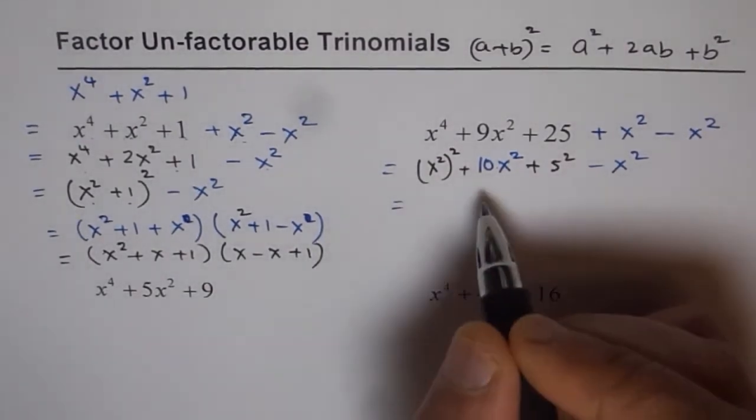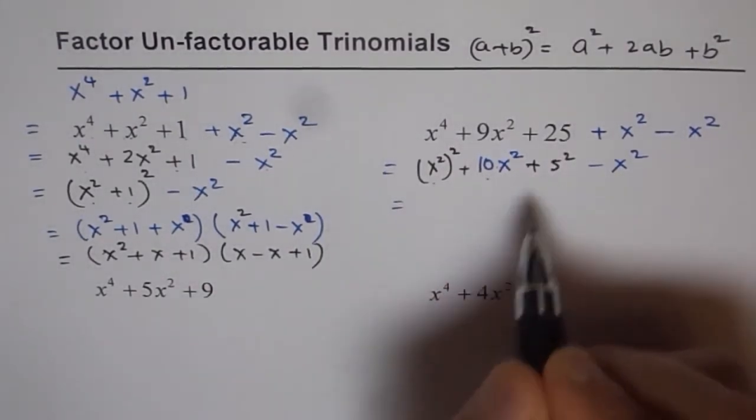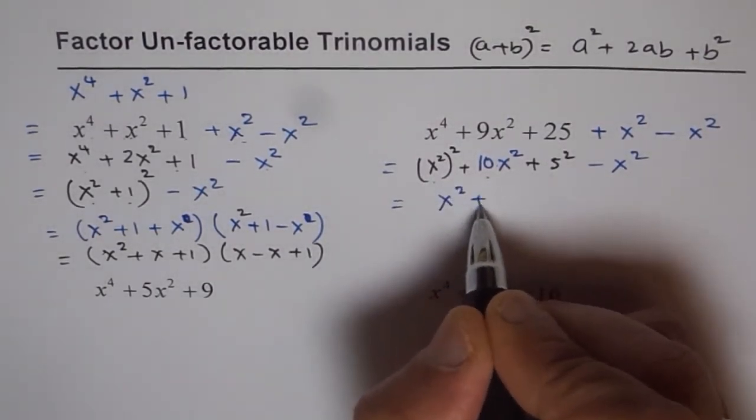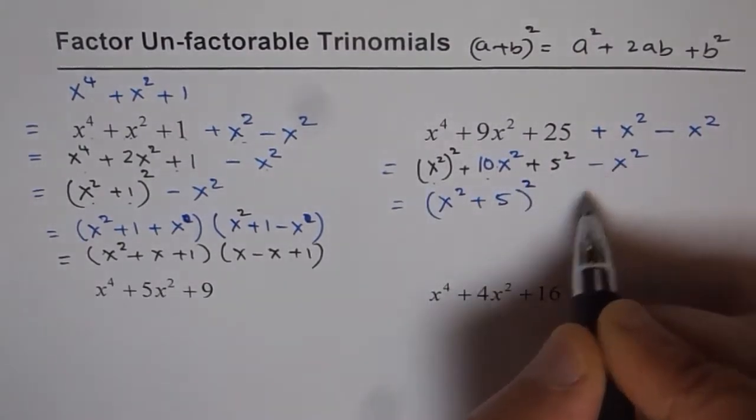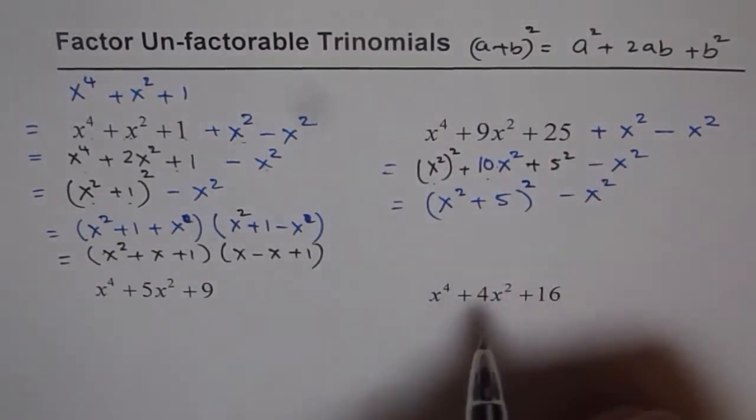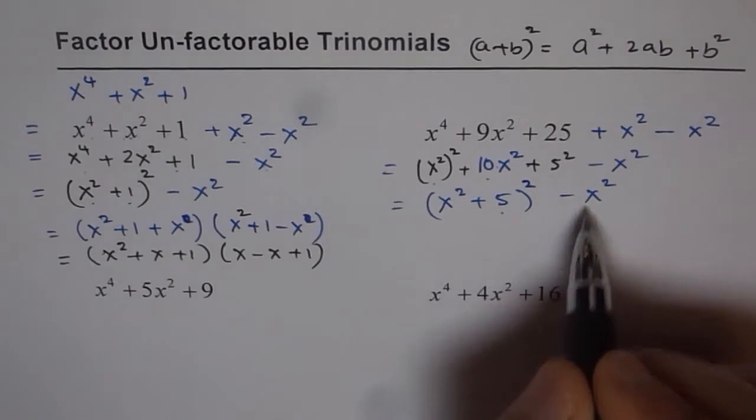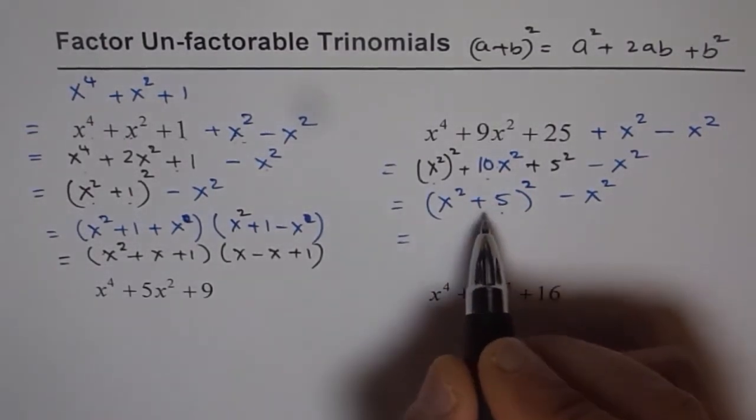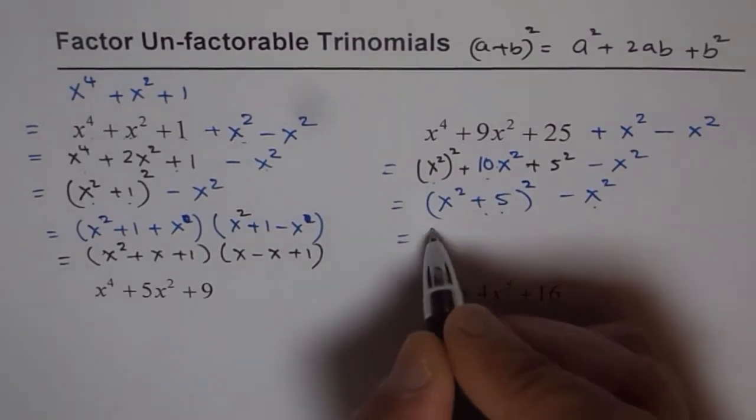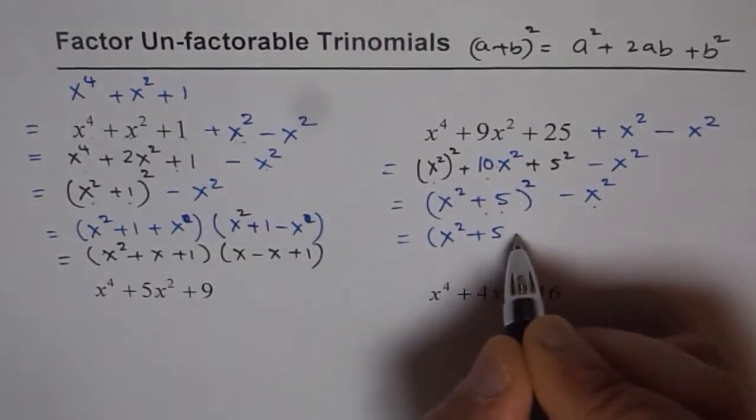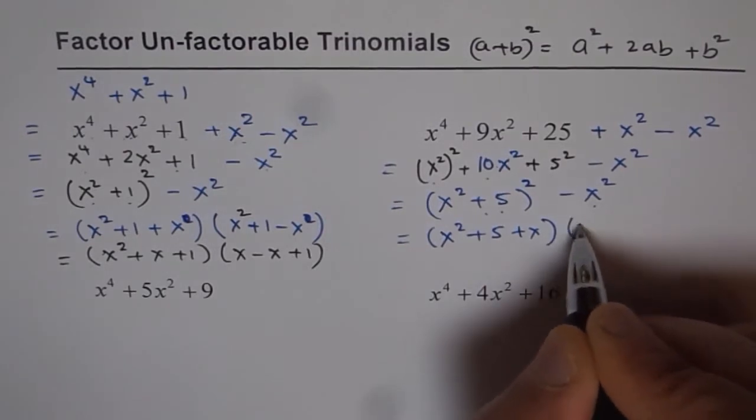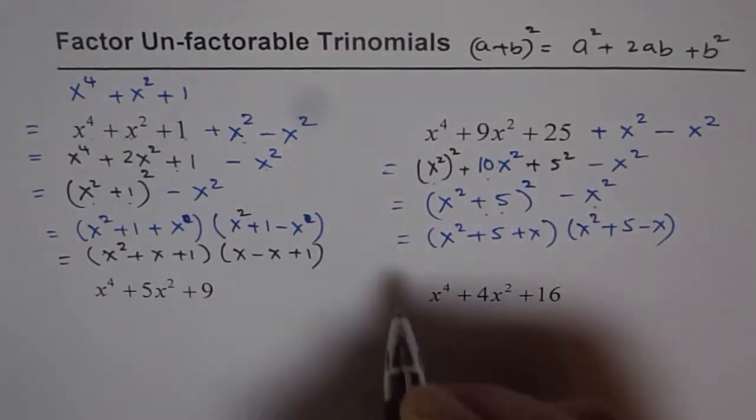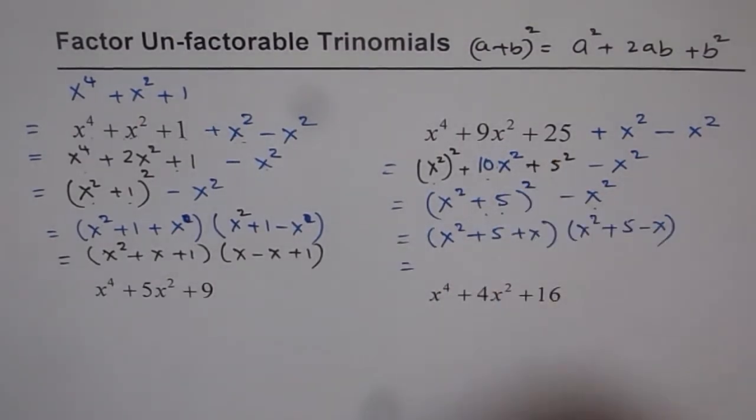But with a huge difference: the first 3 terms now are perfect square, which can be written as (x² + 5)² and then we have -x². At this stage we have difference of squares. So we can factor them as product and sum of these 2. So we get it as (x² + 5 + x)(x² + 5 - x). So that is the factored form of the given trinomial.